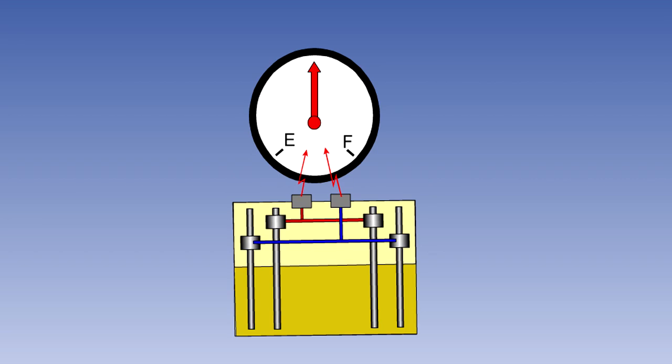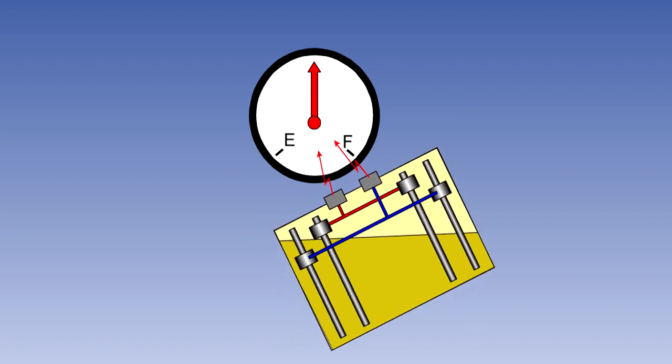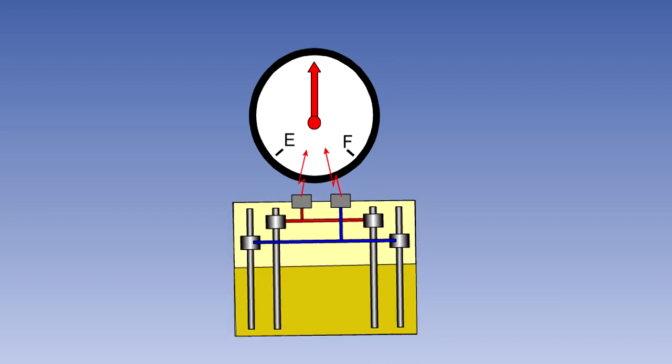To compensate for changes in attitude, the capacitive system has a number of capacitor probes in the tank connected in parallel to average the measurement of the fuel in the tank.